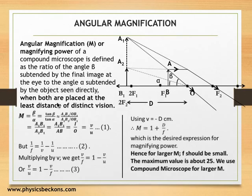When both are placed at least distance of distinct vision, that is, the angles α and β are to be measured by keeping the object as well as the image at the distance of distinct vision. Mathematically, magnifying power is β upon α. As object is small, the angles α and β are also small and can be replaced by their tangents. So β/α is tan β/tan α. From the diagram, tan β is A₁B₁ over capital D or OB₁.